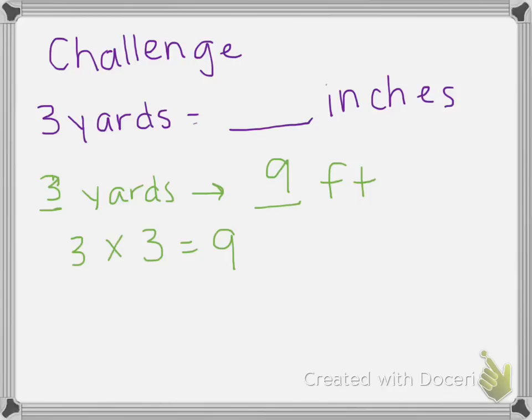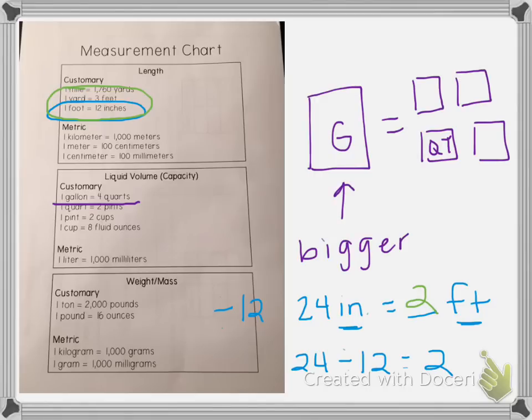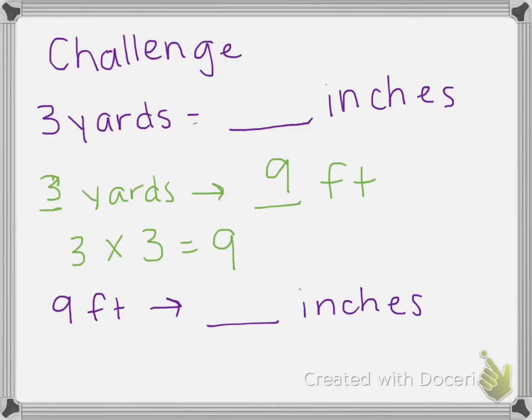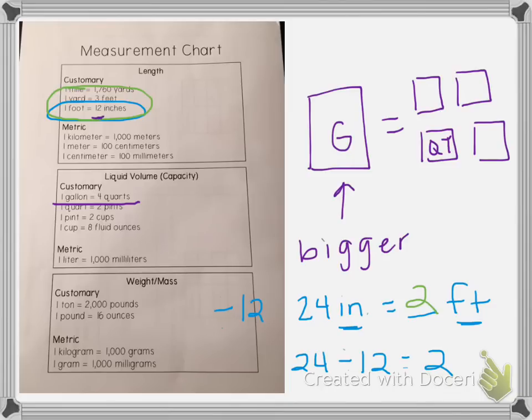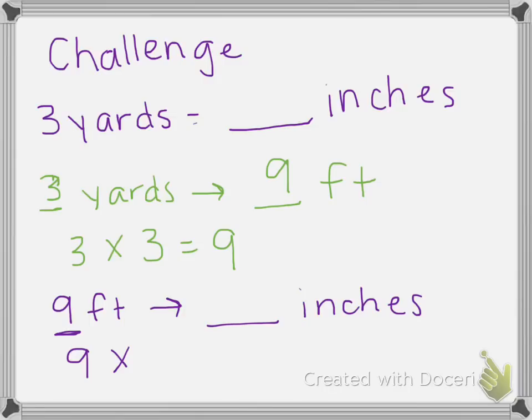I'm not done yet because the problem asks about inches. So now I'm going to change nine feet to inches. So again I'm going from a bigger unit to a smaller unit because a foot is bigger than an inch. So that means I'm going to multiply. I'm going to multiply this number times 12 because one foot is 12 inches.